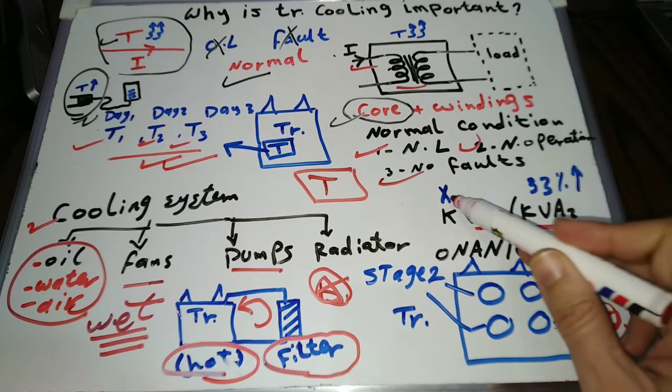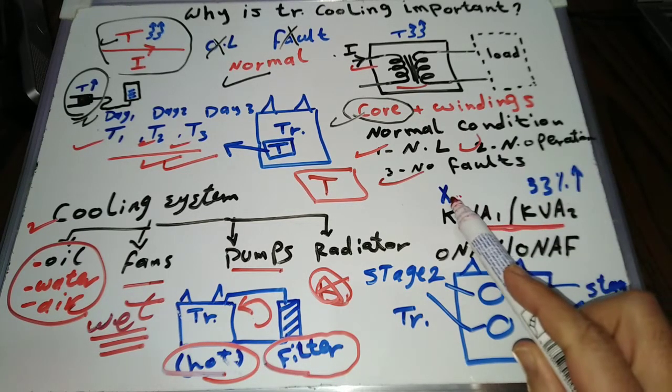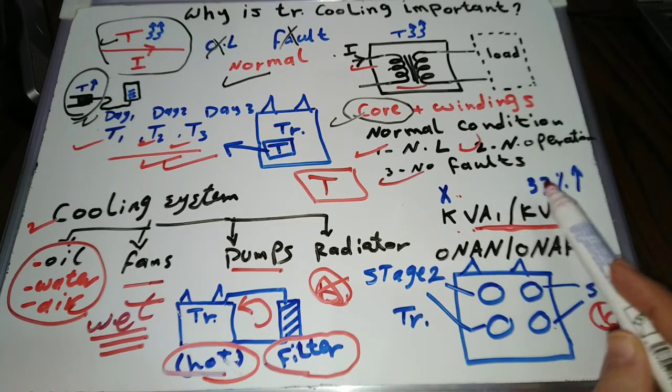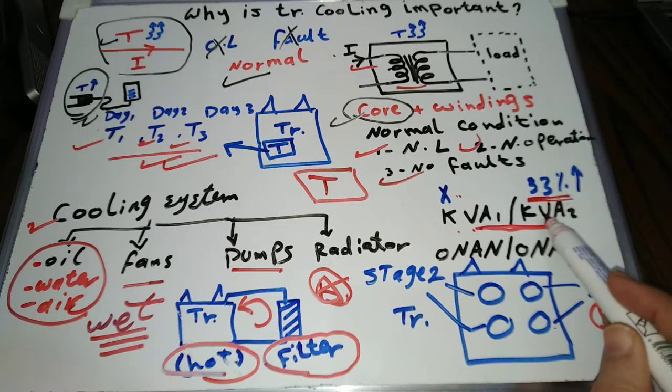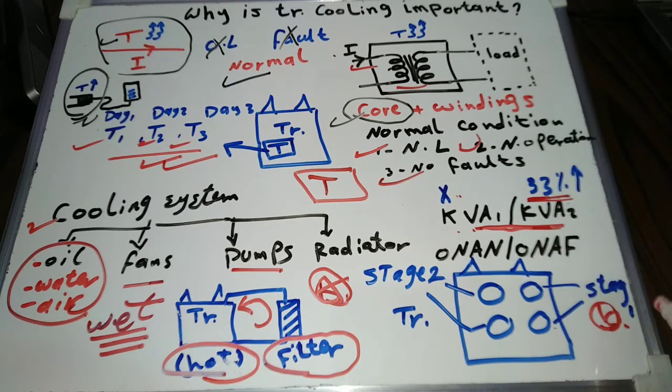The first stage power rating is lower than the second one. I mean, if the transformer power rating is x kilovolt ampere in the first stage, then by operating the second stage of cooling, its power rating will raise to 33% higher than the x kilovolt ampere.